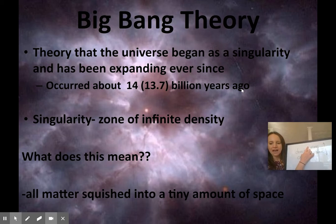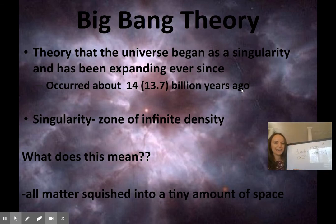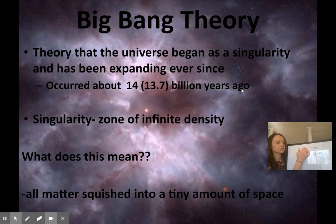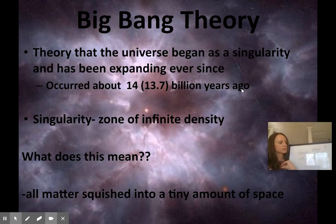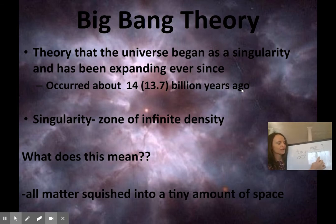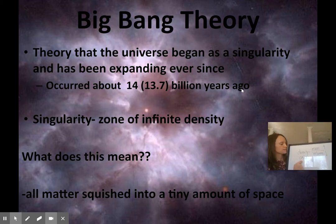Basically, we take all matter — all mass in the universe, which is a very big number — and we put it into a tiny, tiny space, a tiny volume. So a singularity is all matter in the universe condensed into one single point. When you take a really big number and divide it by a very, very small number, you get something close to infinity.